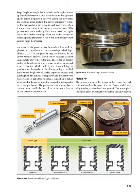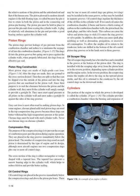The piston pin joins the piston to the connecting rod. It is machined from a nickel steel alloy forging, case hardened and ground. The piston pin is sometimes called a wrist pin because of the similarity between the relative motions of the piston in the articulated rod and that of the human arm. The piston pin used in modern aircraft engines is the full floating type — free to rotate in both the piston and in the connecting rod piston pin bearing. The piston pin must be held in place to prevent the pin ends from scoring the cylinder walls; a plug of relatively soft aluminum in the pin end provides a bearing surface against the cylinder wall.